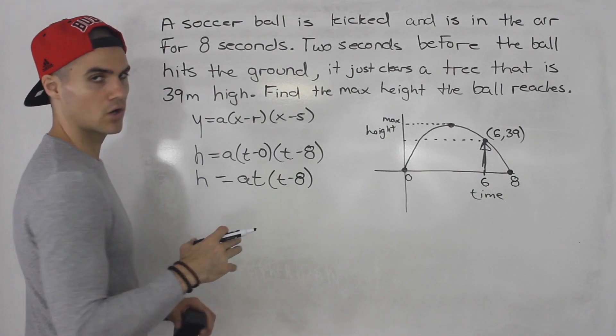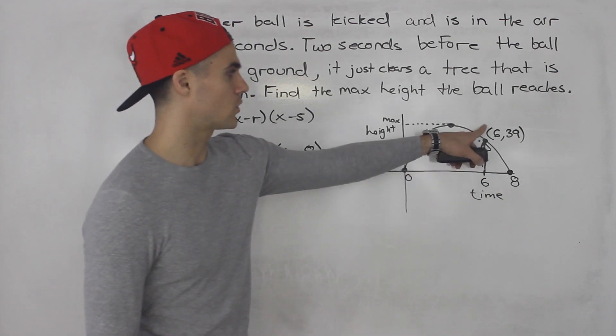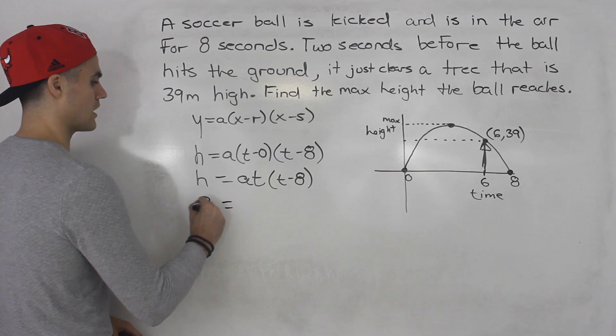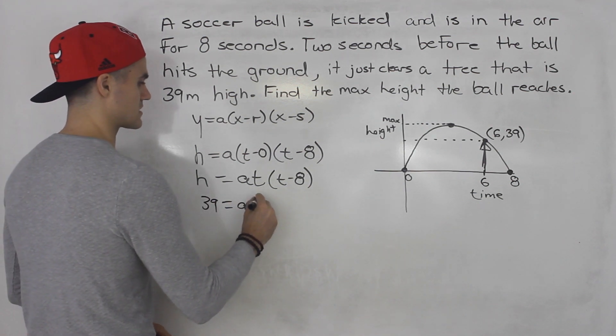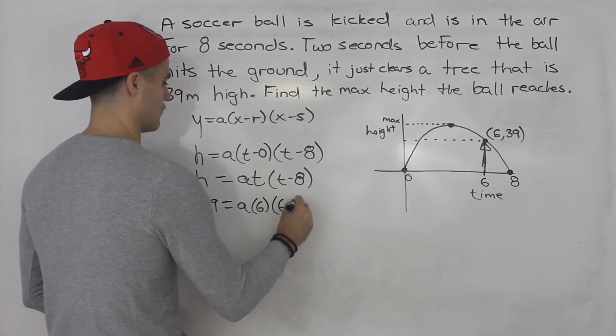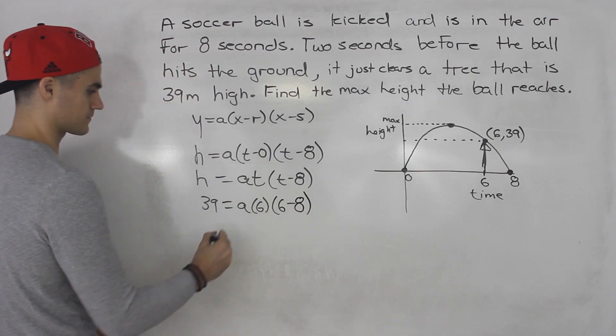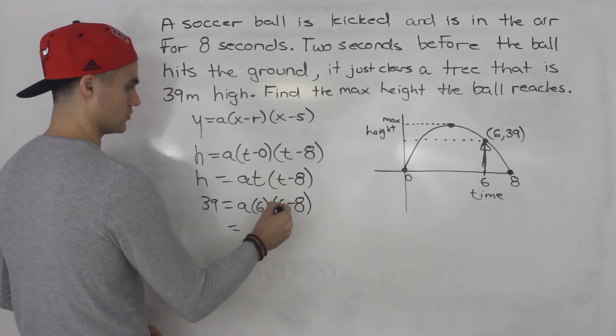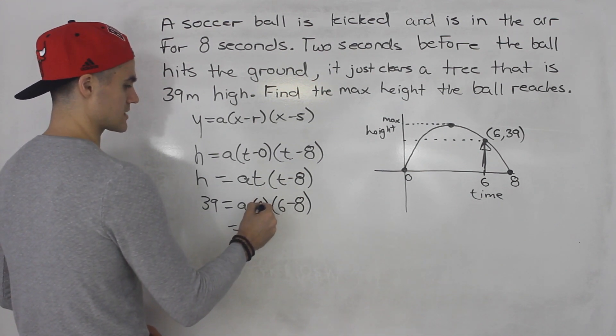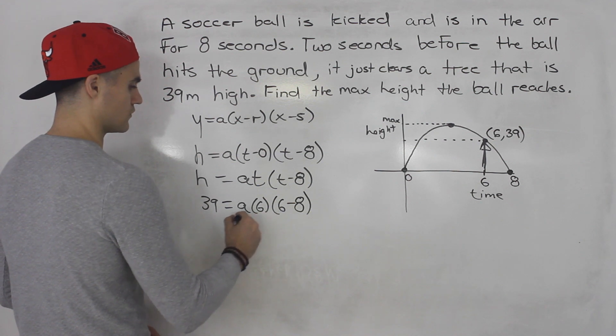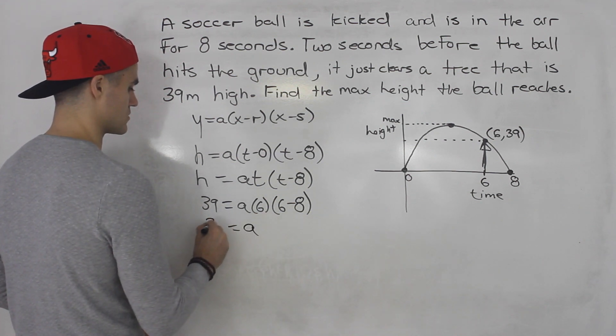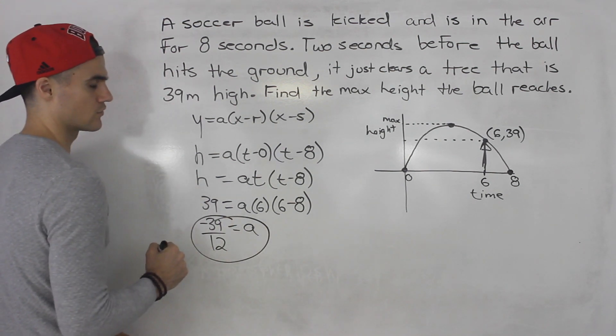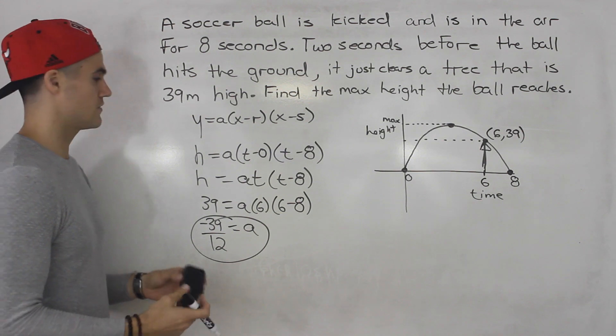How can we do that? Well, we've got to pick a coordinate other than the intercepts. And we're given a coordinate six and 39. So we could plug in 39 for h and then six for t. And this would give us what? This would be a times negative two times six is negative 12. So divide both sides by negative 12. So a is negative 39 over 12. So now with this a value, we have the equation.